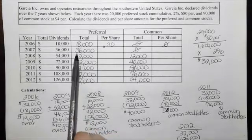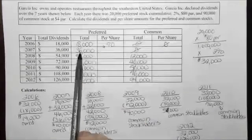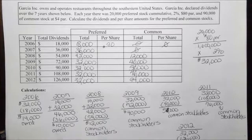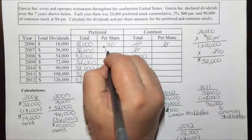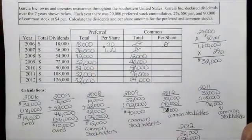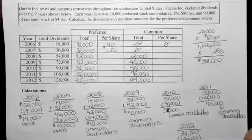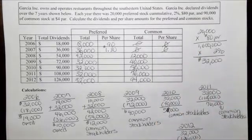In 2007, $36,000 was paid out to the preferred and we still have 20,000 shares, so we take $36,000 divided by 20,000. In 2007 the preferred stock was worth $1.80 per share and the common stock was worth $0.00.